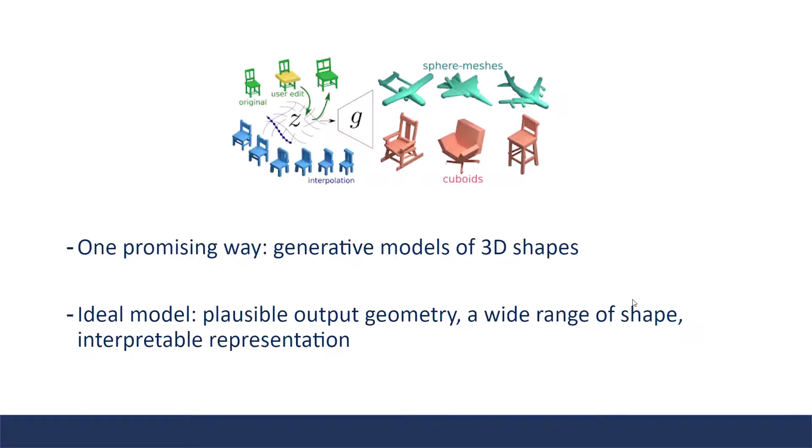An ideal generator model would produce plausible output geometry, capture a wide range of shape variations, and use an interpretable representation which a user can edit later. There have been some parallel works trying to solve this problem, but none of them can achieve all these features.